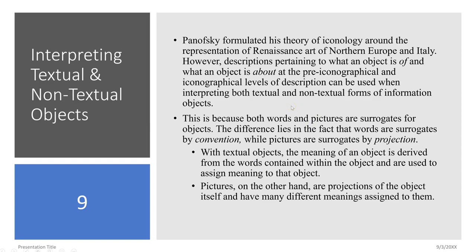One last thing: when prescribing Panofsky's theory of iconology around representation, he provided his theory based upon what an object is about via convention versus projection. With textual objects or objects with words on them, the meaning of an object is derived from the words contained within the object, which are used to assign meaning to that object. Pictures, on the other hand, are projections of the object itself and have many different meanings assigned to them.